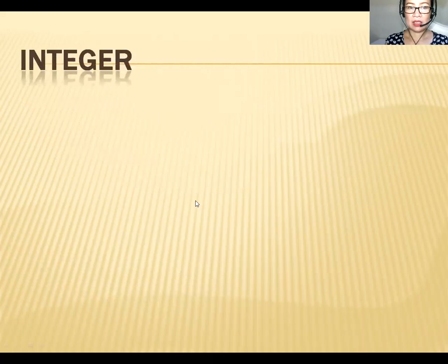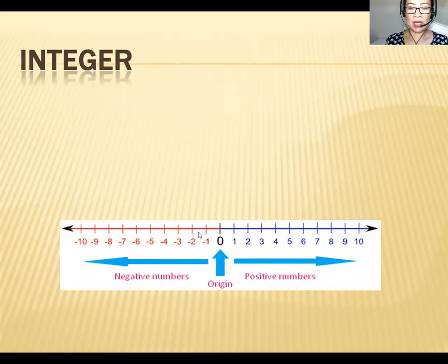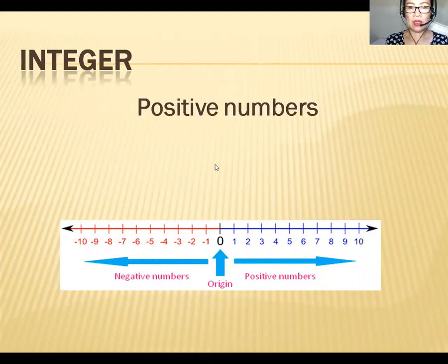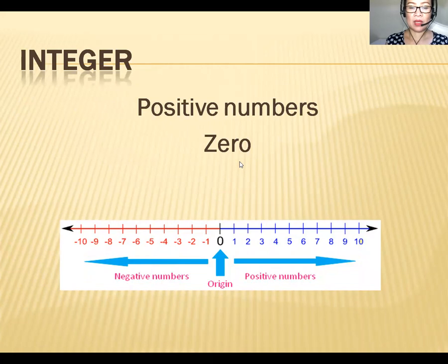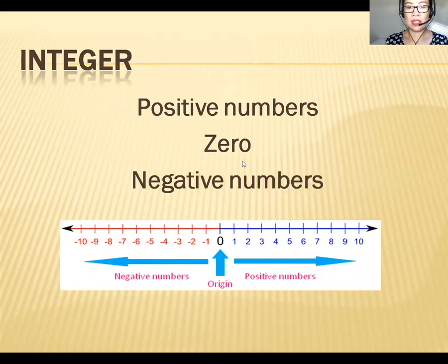Next, what is an integer? When we say integer, you have to think of a number line. A number line has the origin, the negative numbers, and the positive numbers. The origin is zero at the center. At the left of the number line are the negative numbers, and at the right are the positive numbers.